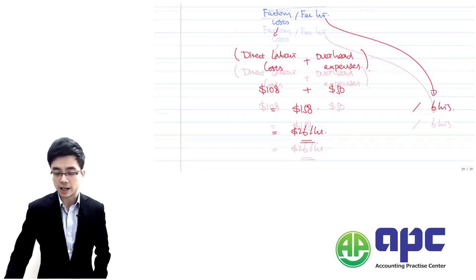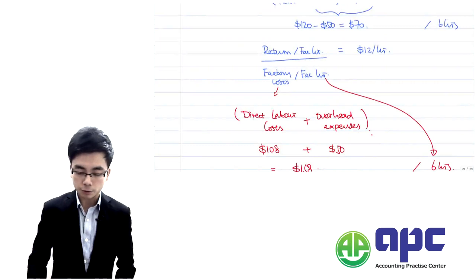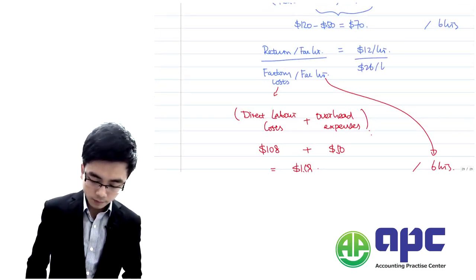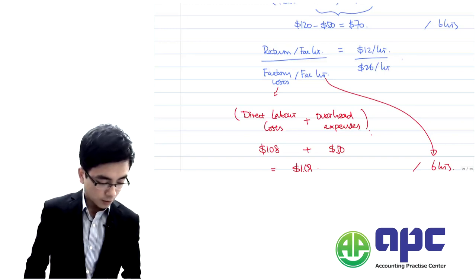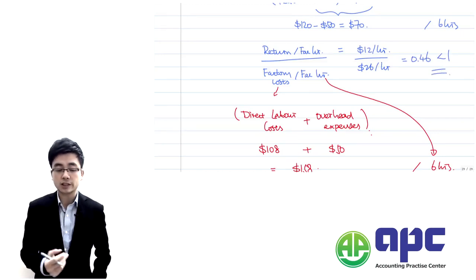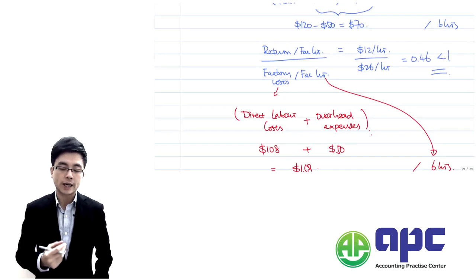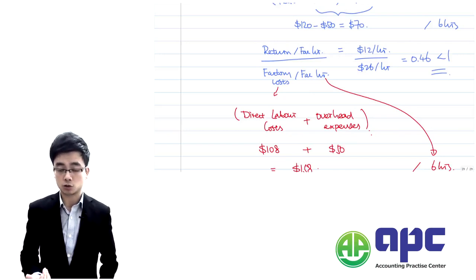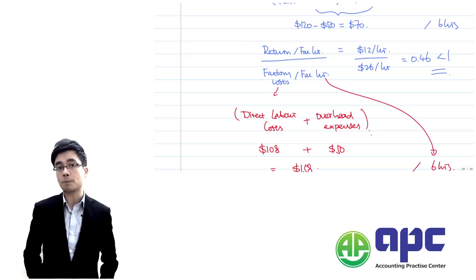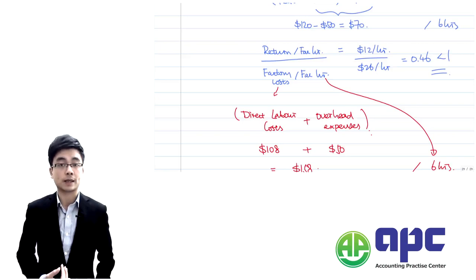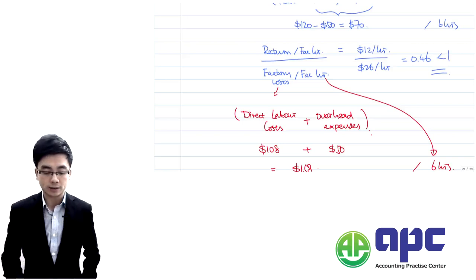Slotting that into the pro forma: TPAR = $12 ÷ $26 = 0.46, which is less than one. The idea is that by producing this product, we can only get $12 as a return but have to pay $26 of cost. Taking into account the bottleneck resource department, this product is loss-making.